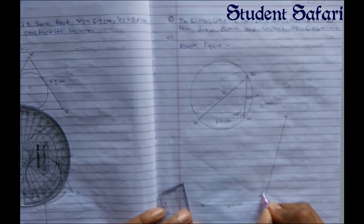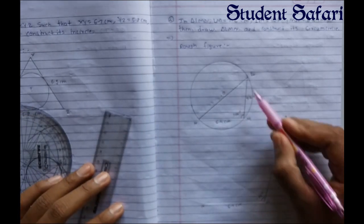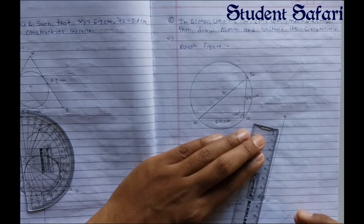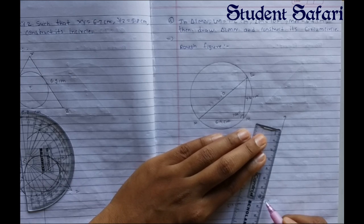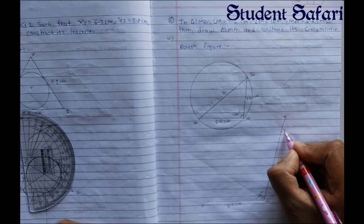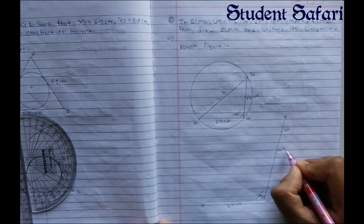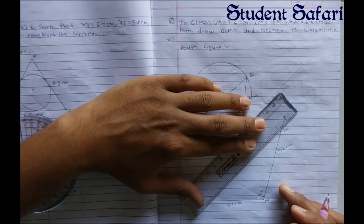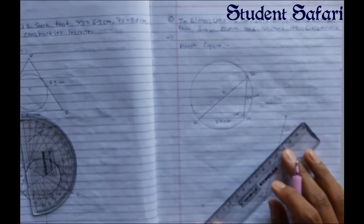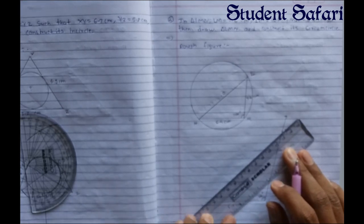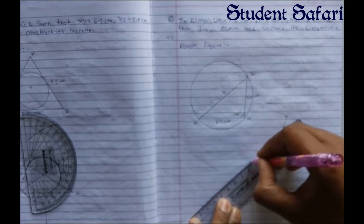This angle is 105 degrees. Now we have side LM equal to 7.2 centimeters. Take 7.2 centimeters in the compass and mark from point M along the angle ray to get point L — LM is 7.2 centimeters. After joining point L to point N we get our desired triangle LMN.